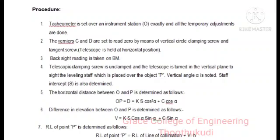Then the difference in elevation between O and P is determined as V = KS cosα sinα + C sinα, where K equals the multiplying constant and C is the additive constant, S is stadia intercept, and α is the vertical angle taken. Then the RL of point P is determined by RL of line of collimation plus V minus H.